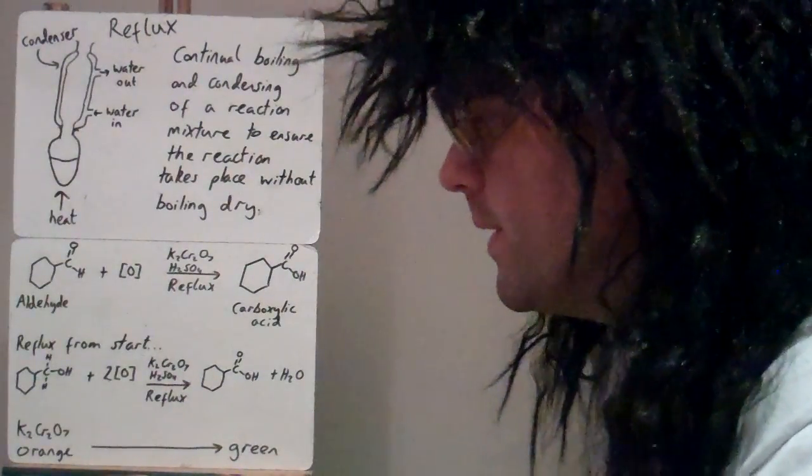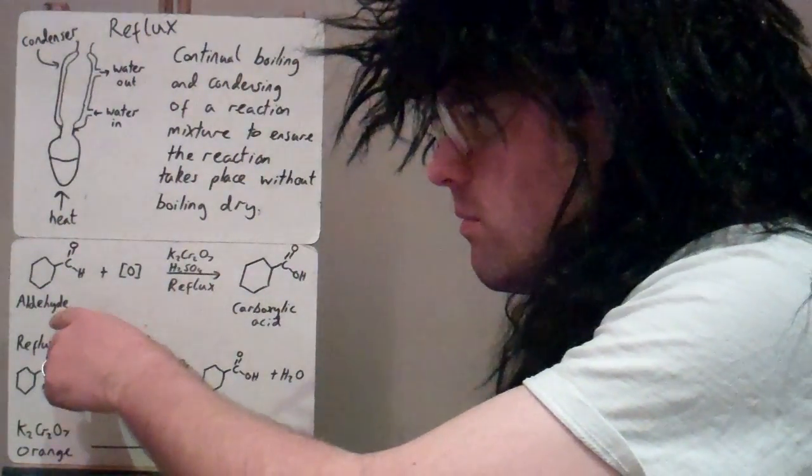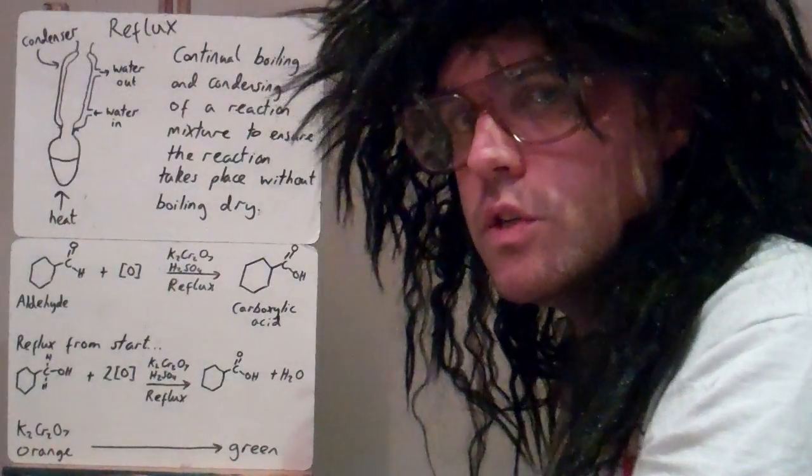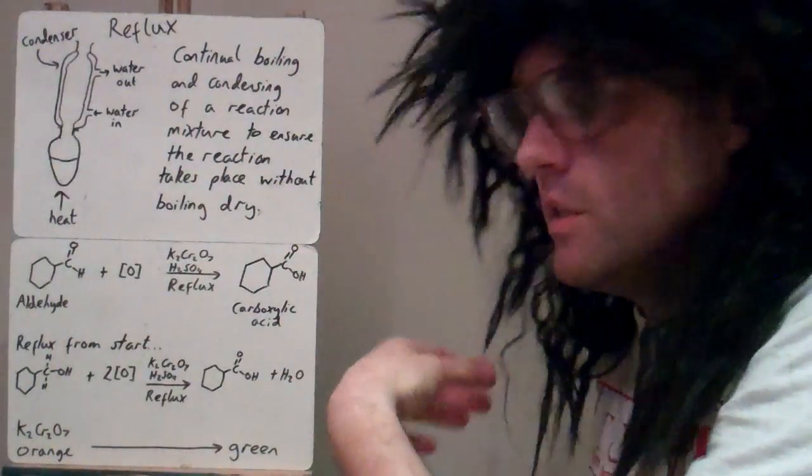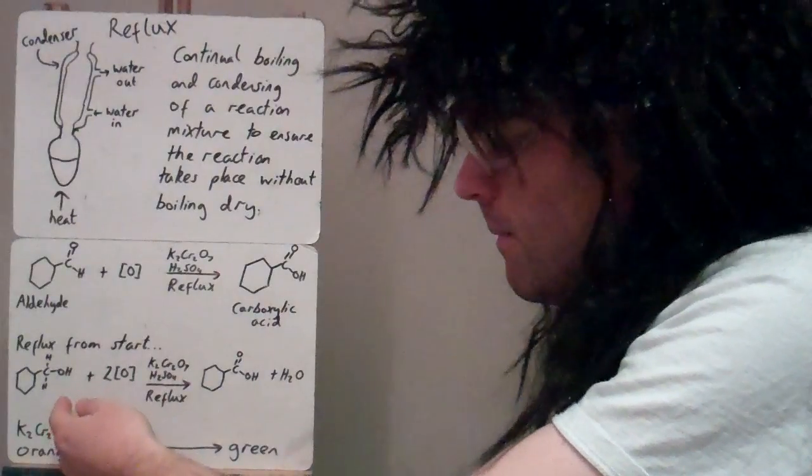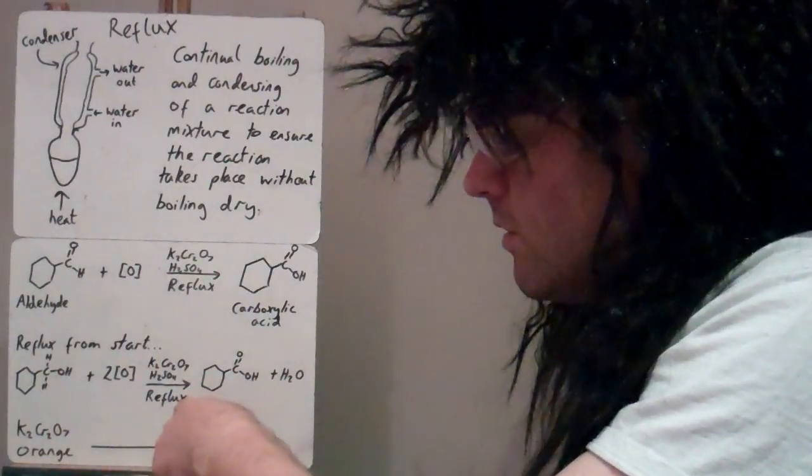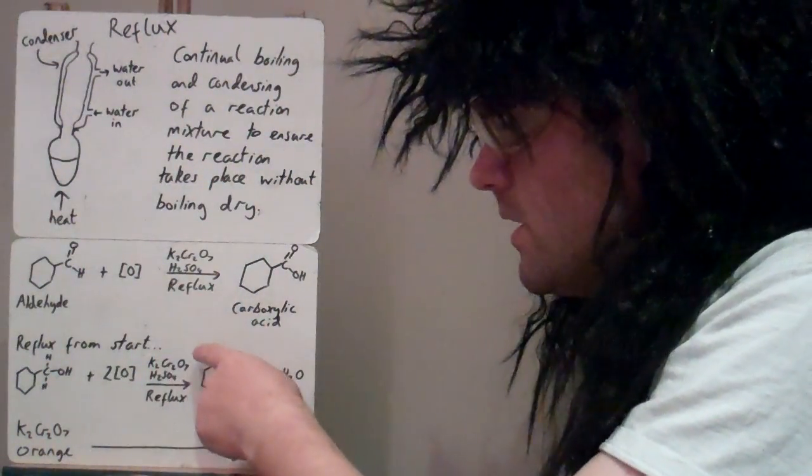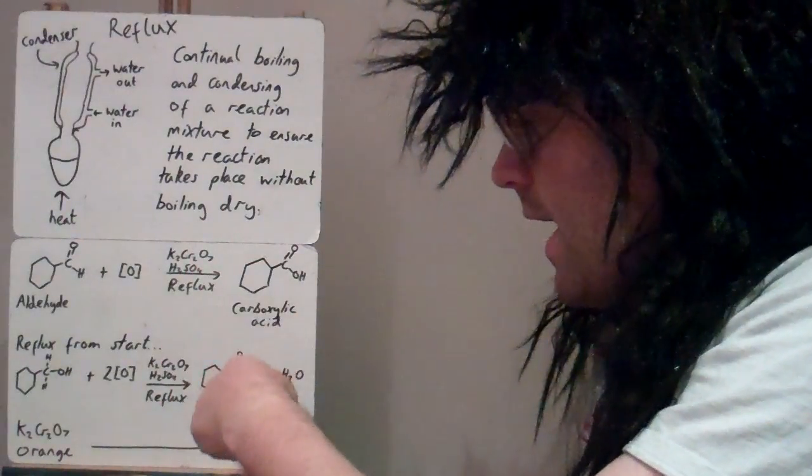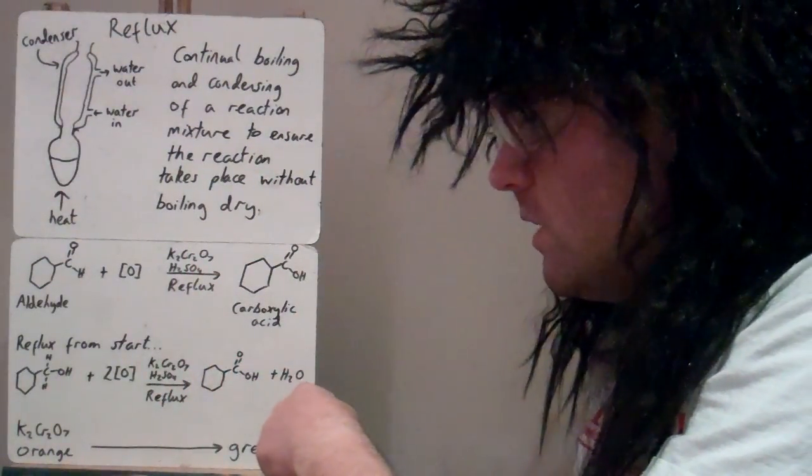Now what you'd probably do is rather than, you know, you wouldn't make the aldehyde by distillation and then reflux it to make a carboxylic acid, you'll just put the primary alcohol in at the beginning. In reflux conditions, potassium dichromate acidified and it will go to the carboxylic acid and water.